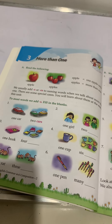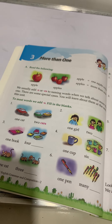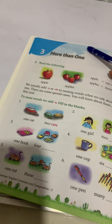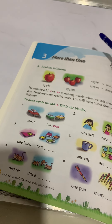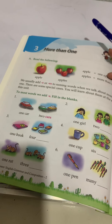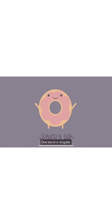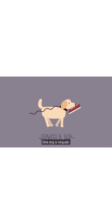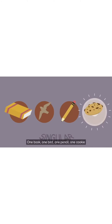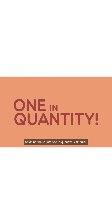Now today, we are going to start with a new topic called 'more than one.' First, let's learn how to identify singular and plural nouns. One donut is singular. One dog is singular. One person is singular. One book, one bird, one pencil, one cookie. So anything that is just one in quantity is singular.